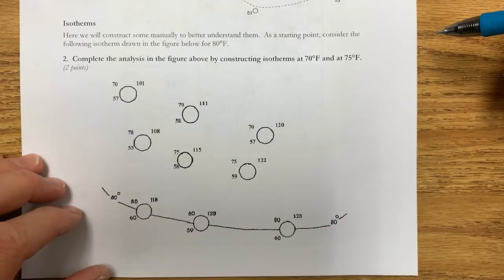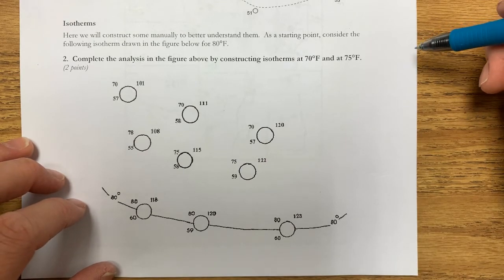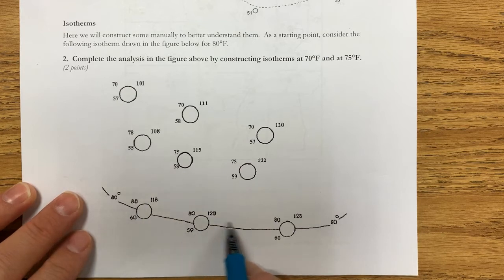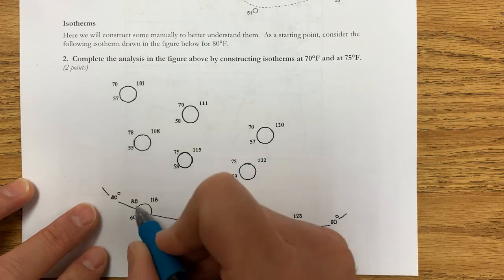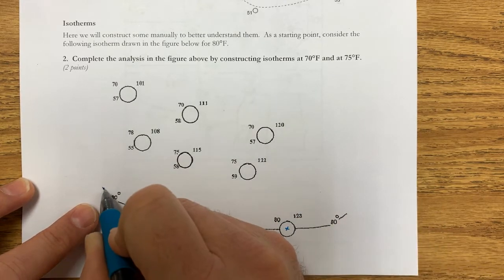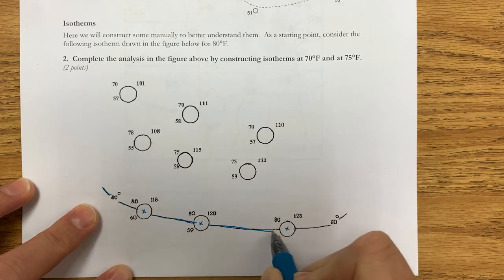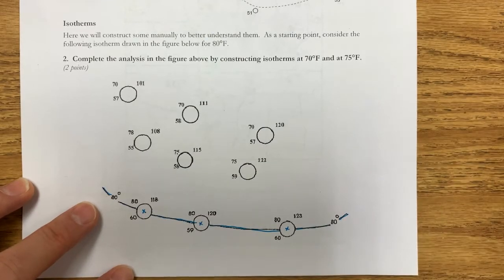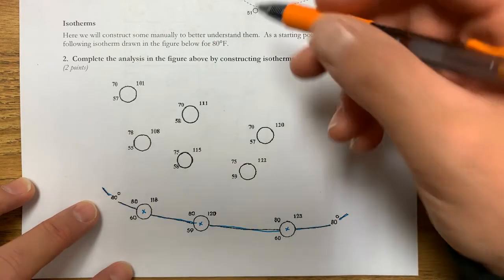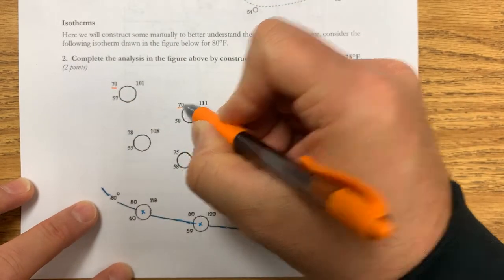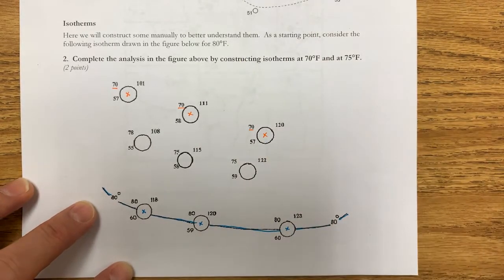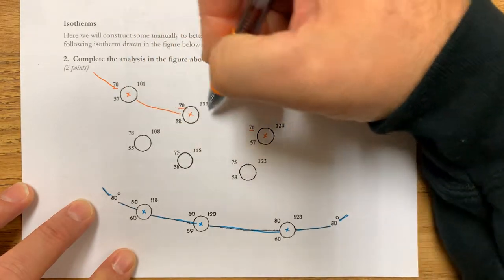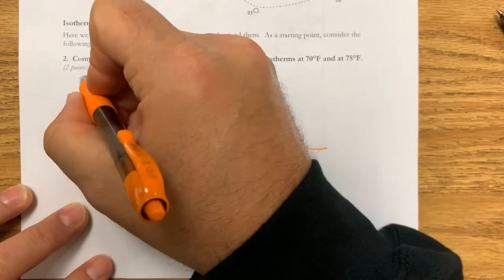We're asked to create a 70-degree Fahrenheit isotherm and a 75-degree isotherm — an 80-degree isotherm is already drawn in. To create an isotherm, you draw a line between areas of similar temperature. For the 80-degree isotherm, you put an X where you think 80 is and draw your line connecting points of equal temperature. For the 70-degree isotherm, you find everywhere you see 70 degrees — temperature is in the upper left of the weather station symbol — put X's there, and connect them with a line.